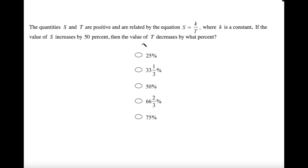The quantities s and t are positive and are related by the equation s equals k over t, where k is a constant. If the value of s increases by 50%, then the value of t decreases by what percent?